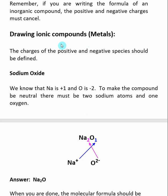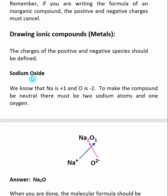If the species named first in the compound name is a metal, then the charges of the positively and negatively charged species should be defined. You should know exactly what the charges are by either understanding the polyatomic or looking at the periodic table. Here's our first question: we want to draw the structure of sodium oxide. The first element named is sodium, so it's a metal. What I want to do is identify what elements are involved.